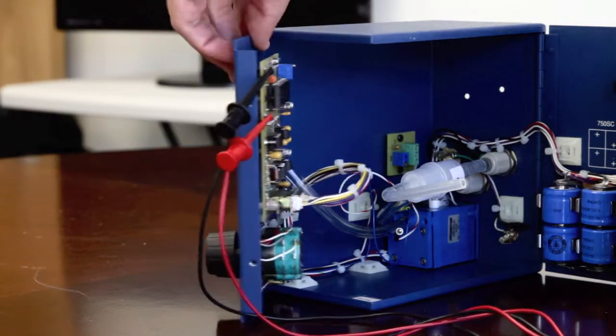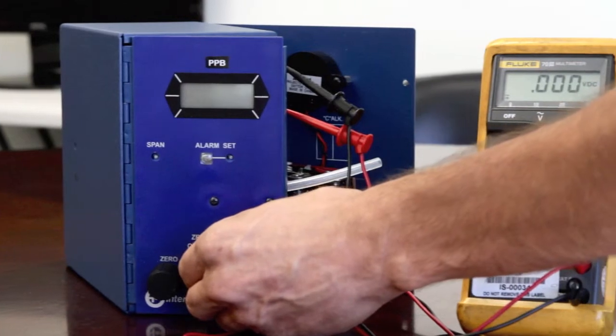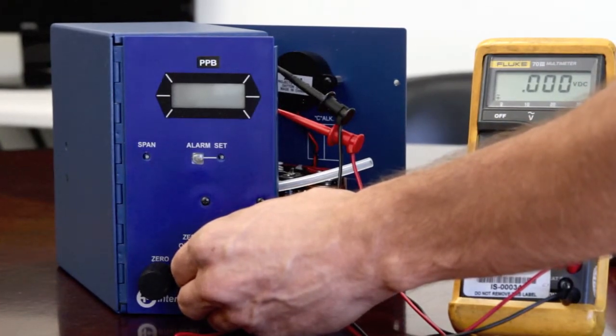Now, go to the function switch located in the front of the instrument and turn the function switch to zero.